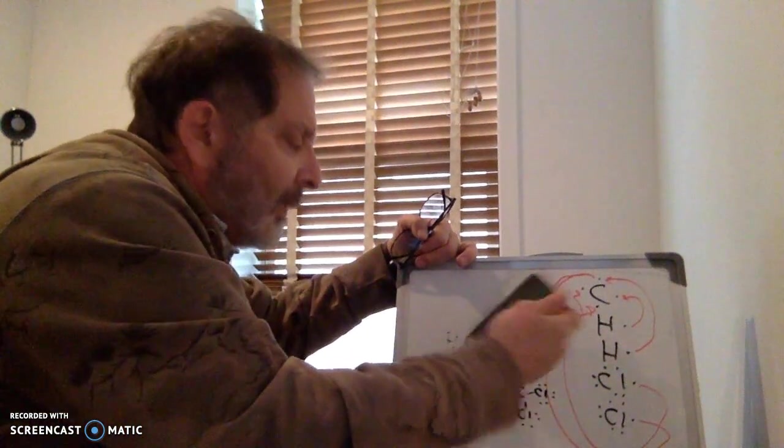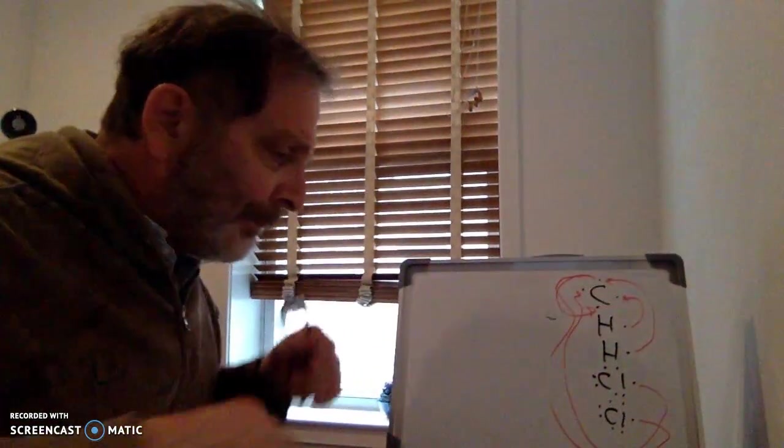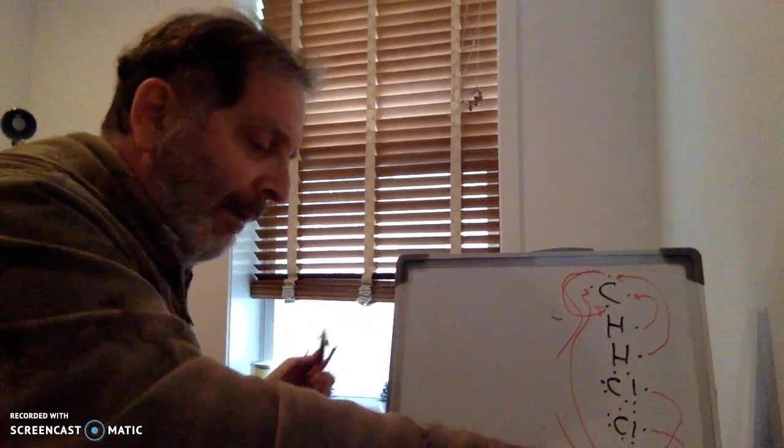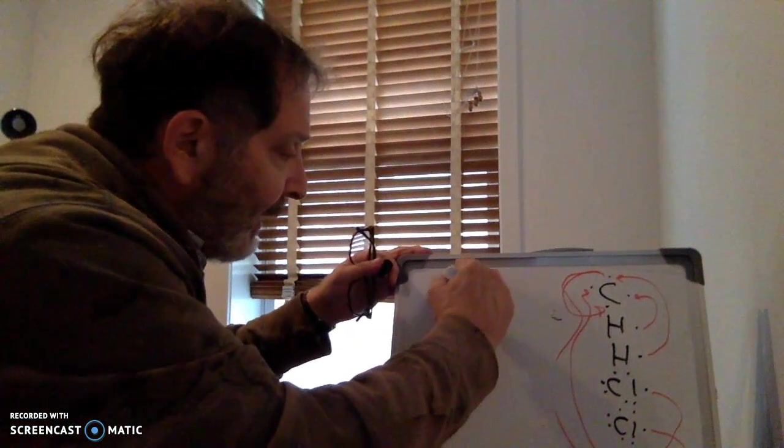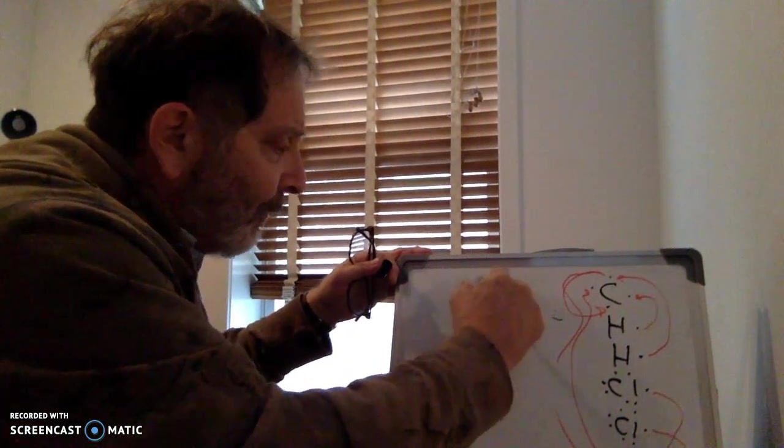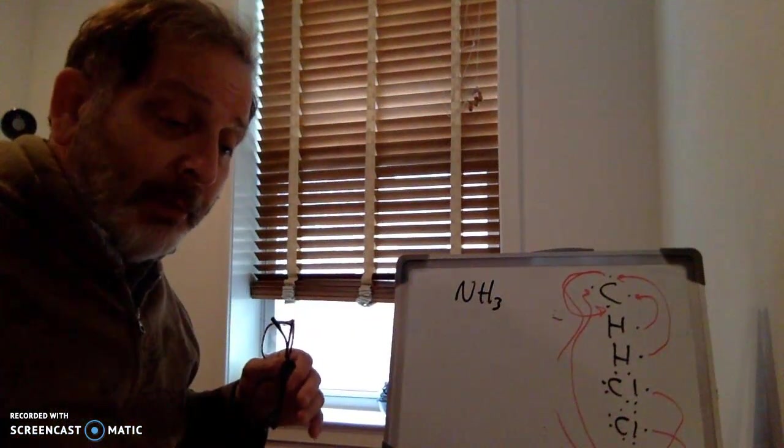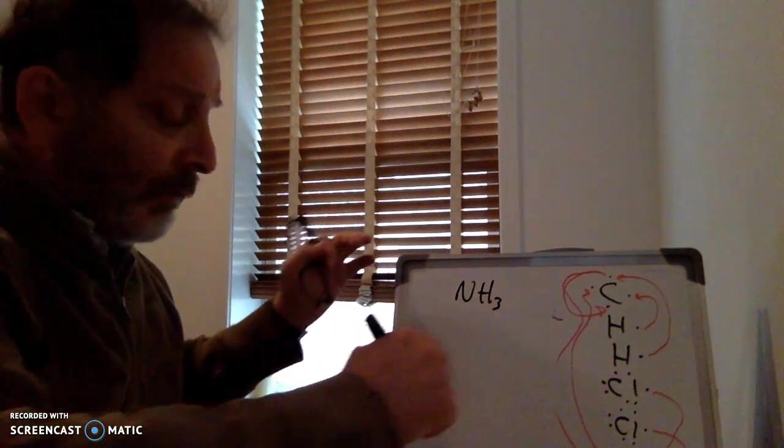Okay. Let's do the next one. So we have NH3, which happens to be ammonia, which a lot of people are using these days for sterilization.